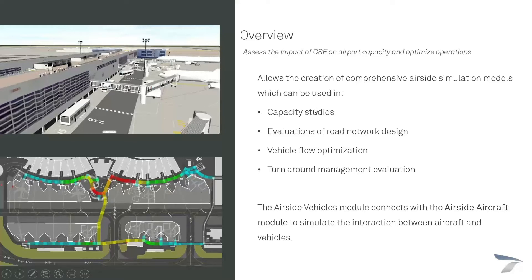What kind of capacity studies? For example, you can ask whether a fleet of seven towing trucks and eight buses is enough for your operation, or whether you need more buses to ensure a specific service level. Every time an aircraft needs to be serviced and this module is enabled, the aircraft will wait until a bus has come to take out passengers, the aircraft has been filled with fuel, or a towing truck is available to push back the aircraft.